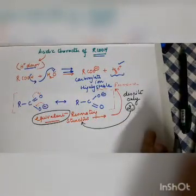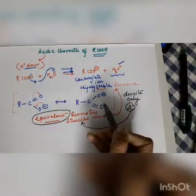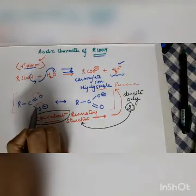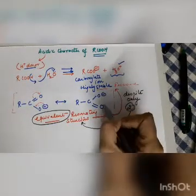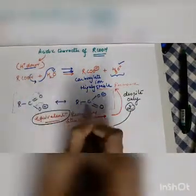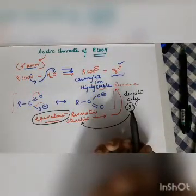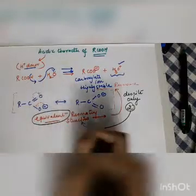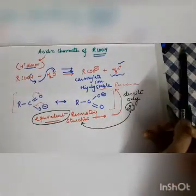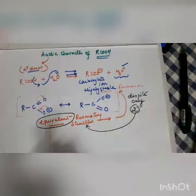Equivalent means both structures are similar. In one structure you have a negative on oxygen and a double bond O; in the other, also a negative on oxygen and double bond O. R is the same in both cases with a carbon. Whenever you have equivalent resonating structures, however few in number, it leads to higher stability.